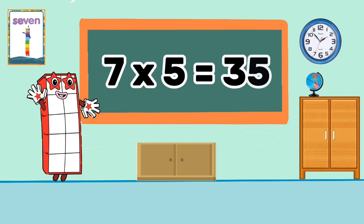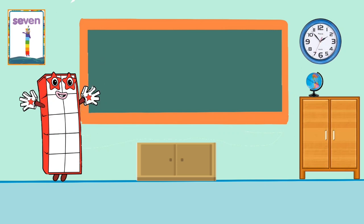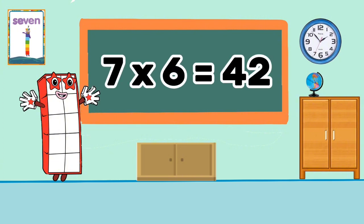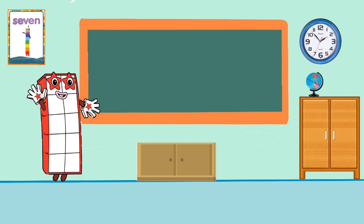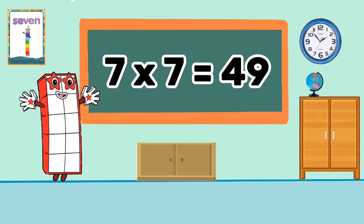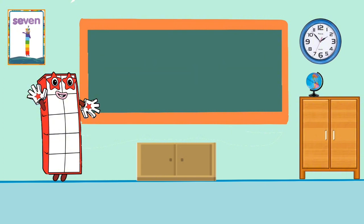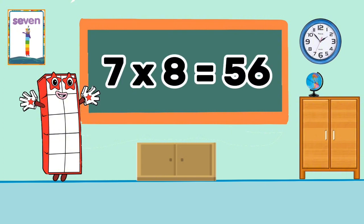7 times 5 equals 35. 7 times 6 equals 42. 7 times 7 equals 49. 7 times 8 equals 56.